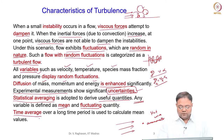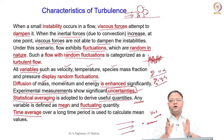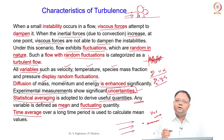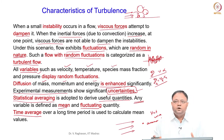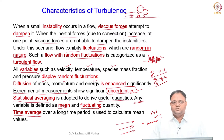Time averaging is done over a long period of time because many oscillations are present. When you take a time average over a particular time period you get one mean; over a longer time you may get another mean value. The mean value should not vary with the time period — if you take a sufficiently long time period, the mean value will not change.